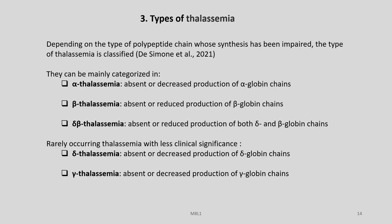The various types of thalassemia are classified depending on the type of polypeptide chain whose synthesis has been impaired: alpha thalassemia, beta thalassemia, or delta-beta thalassemia. In alpha thalassemia there is absence or decreased production of alpha-globin chains, and in beta there is absence or reduced production of beta-globin chains. In delta-beta there is absence or reduced production of both delta and beta globin chains. Rarer types include delta thalassemia and gamma thalassemia.